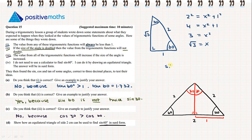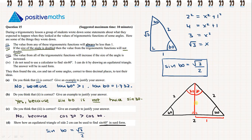Now we can find the sine of 60 degrees: it's opposite over hypotenuse, which is the square root of 3 over 2. It's in surd form because it contains a square root sign. It's important to be able to draw this triangle as we may be asked for sine, cosine or tan of 30 or 60 degrees. We also need to be able to draw the triangle to find sine, cosine and tan of 45 degrees in surd form.